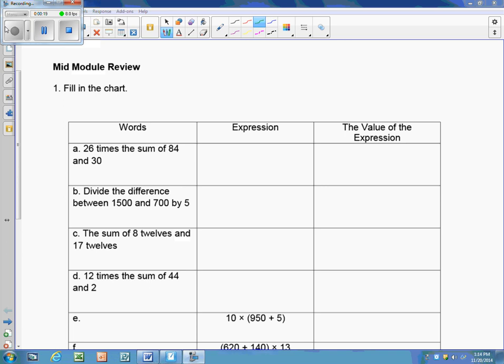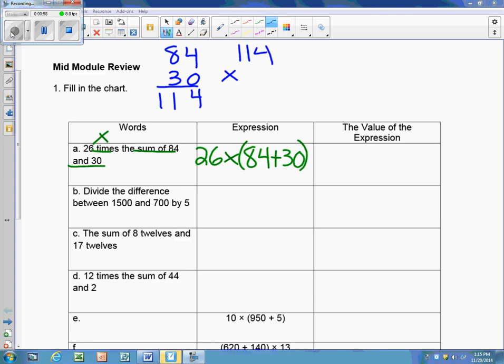We simplify it and we do not use an equal sign. So first it says 26 times the sum of 84 and 30. So it's 26 times and then we have to find the sum of 84 and 30. Now we need to solve this. The first thing we need to do is add the 84 and the 30. When we add the 84 and the 30 we get 114 and then we have to multiply 114 times the 26. When we multiply 114 times 26 we get 2,964.